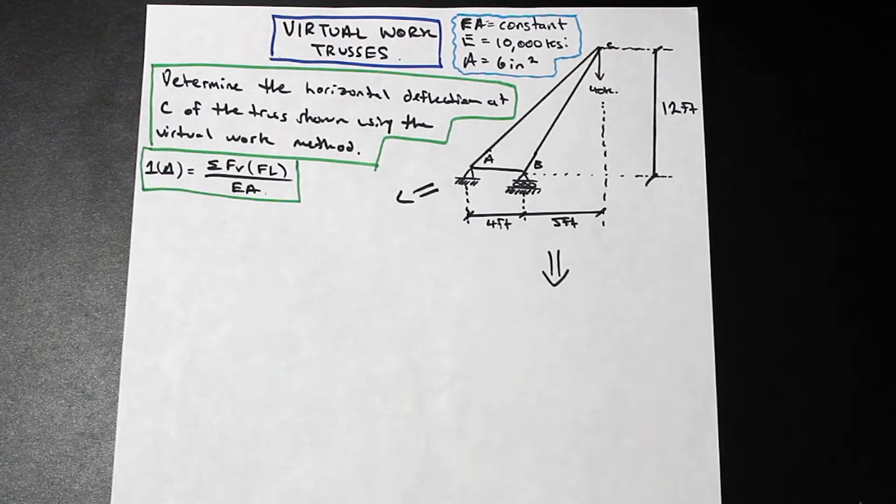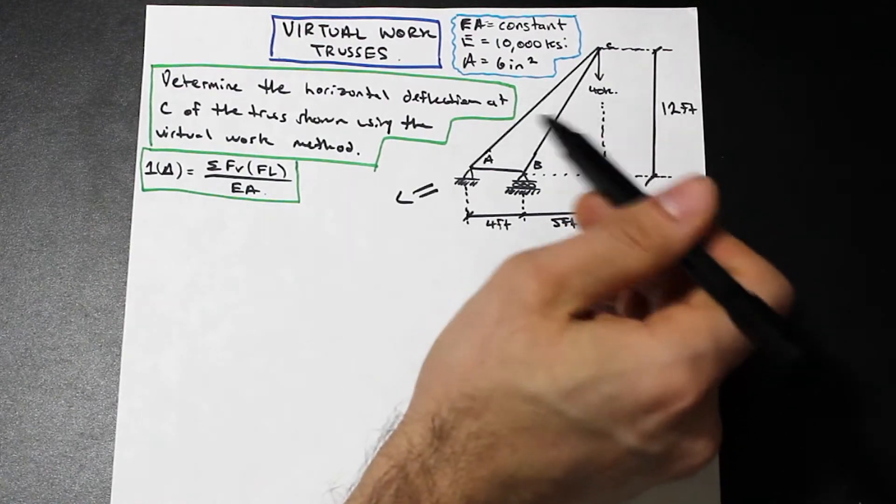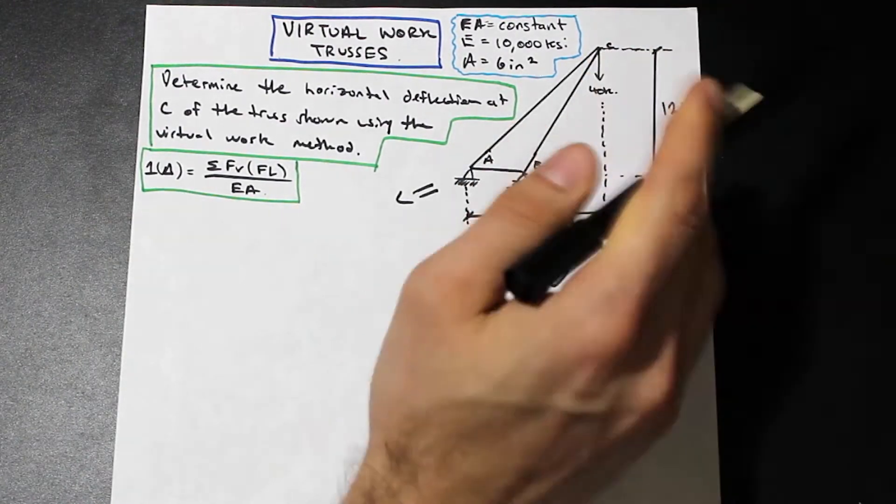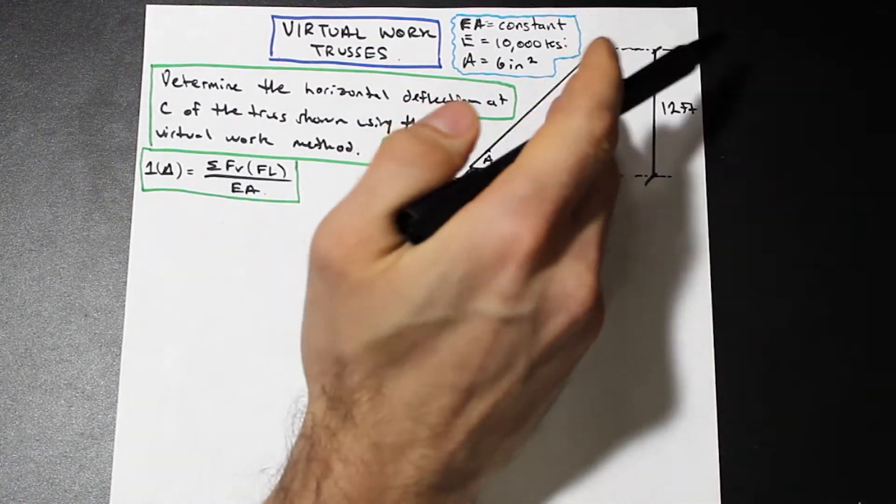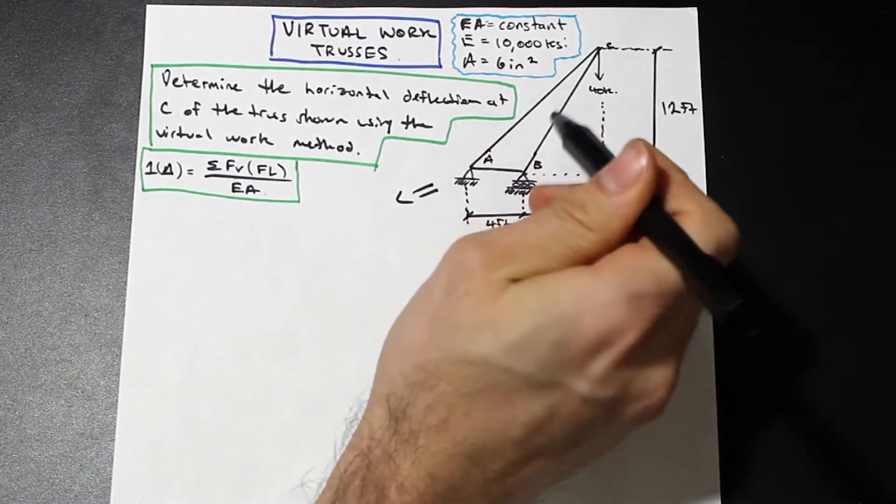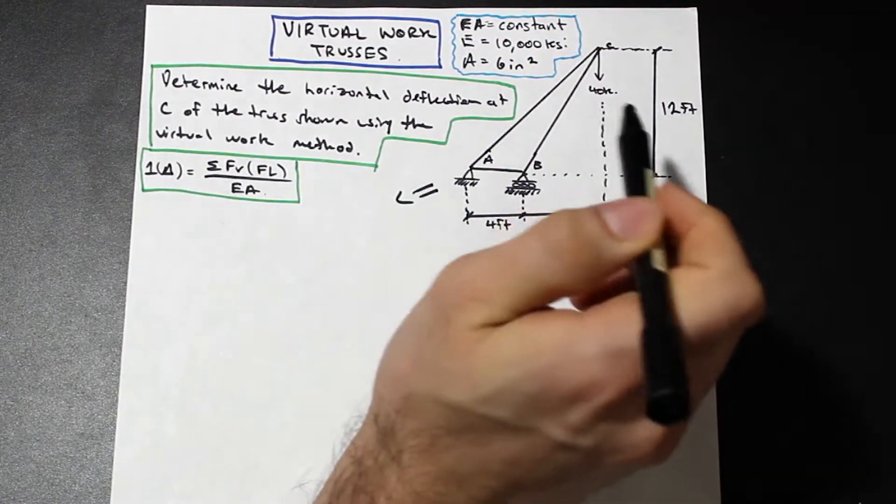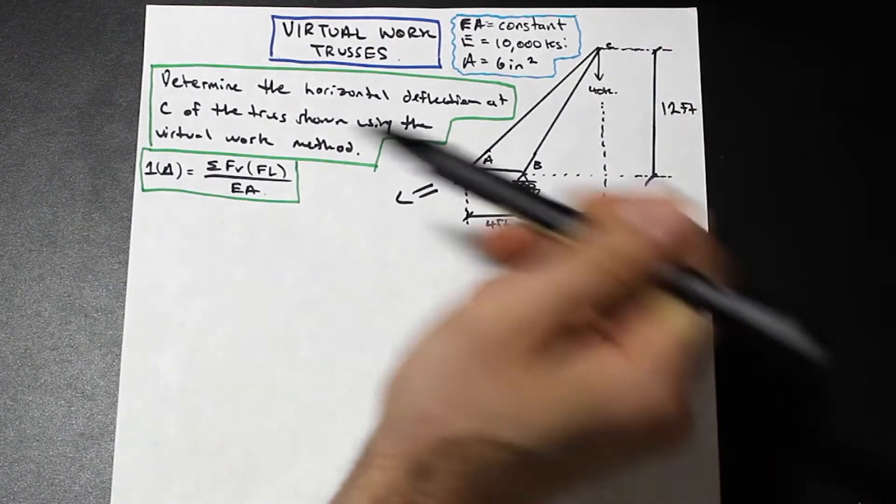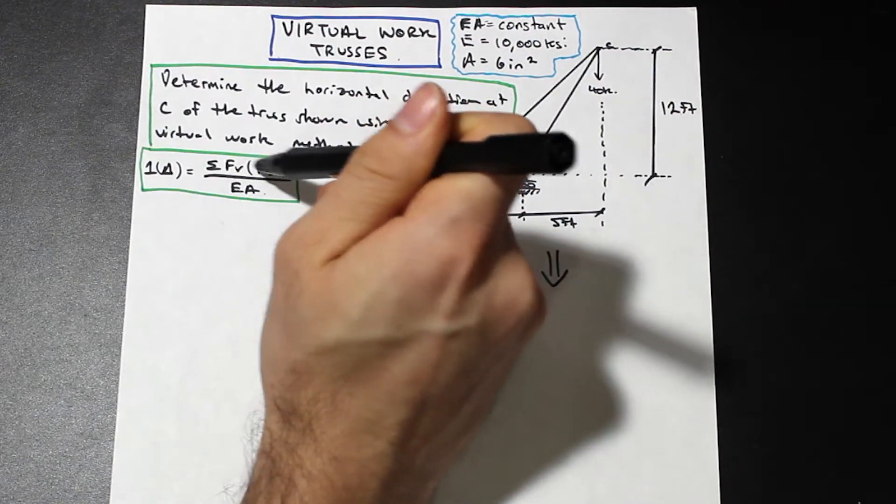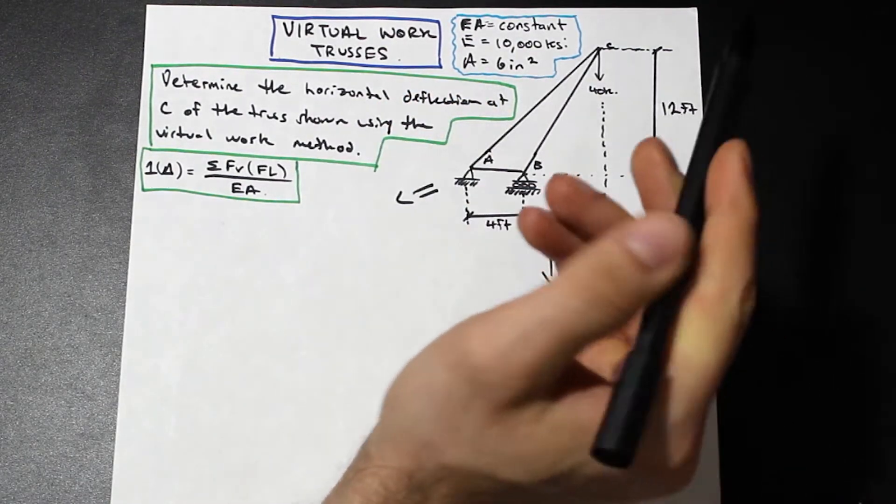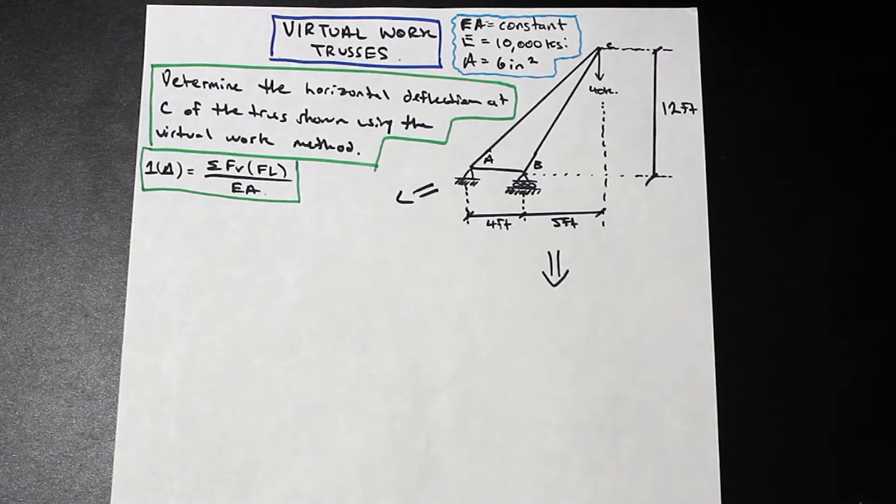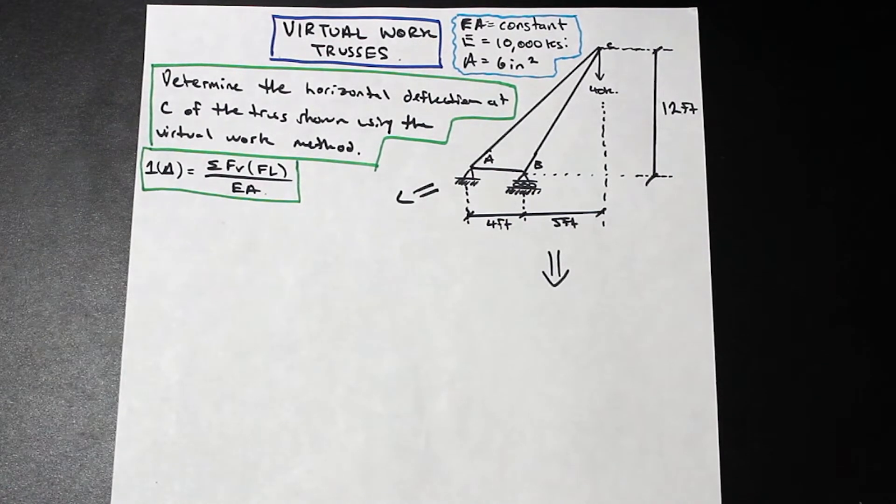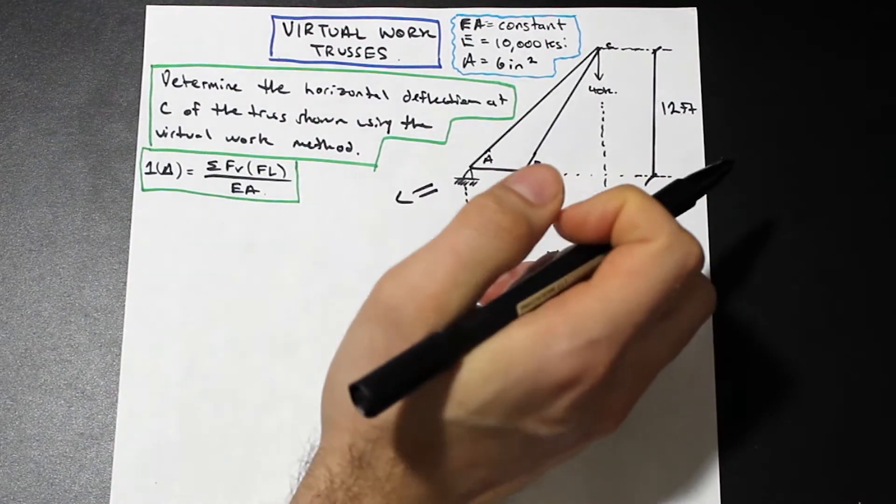The only difference essentially for a truss is that in a truss situation, all of our members are pinned and we don't have any moments being developed. So we have purely axial forces in each member. With that being said, there's no I in the truss formula. We've replaced that with A. We have the F here, which is the axial force, and then the length. So for a truss, we're working with the forces in the members, the length of the members, and the cross-sectional area of those members, as well as the modulus of elasticity.